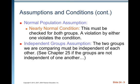Normal population assumption — just like always, this needs to be checked for both groups. You need to check the nearly normal condition for each group. A violation by either one violates the condition, so you're going to be looking at two histograms, stem plots, dot plots, or normal probability plots — something that lets you judge whether the nearly normal condition holds for each of the two groups.